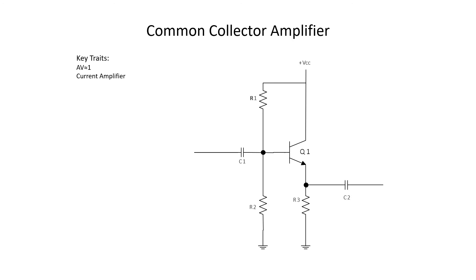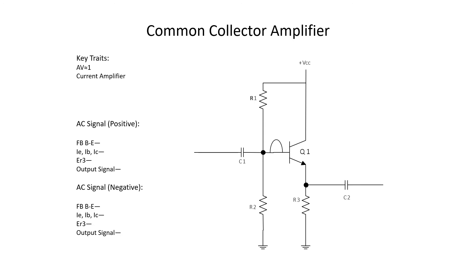Let's bring in some AC. On positive alternation, we increase forward bias, which increases emitter, base, and collector current. More current flows through R3, giving it a greater voltage drop, and since R3 develops our output signal, we get a positive alternation on the output. Notice that with the common collector, the output is in phase with the input. When the AC alternates negative, we decrease forward bias at the base-emitter junction, decreasing current flow through R3, which gives a decreased voltage drop — producing a negative alternation on the output, in phase with the input.